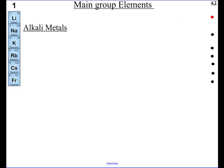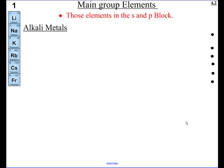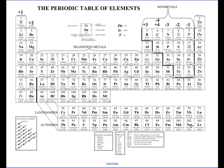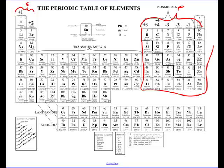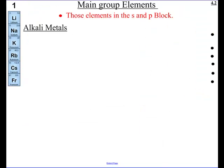Before we do that, I want to talk about main group elements, because you're going to hear that term quite a bit. The main group elements are those elements within the S and P block. On the periodic table, we're talking about the S block on the left and the P block on the right. That's where so much chemistry happens, at least in this first year — a lot of interesting stuff happens there.